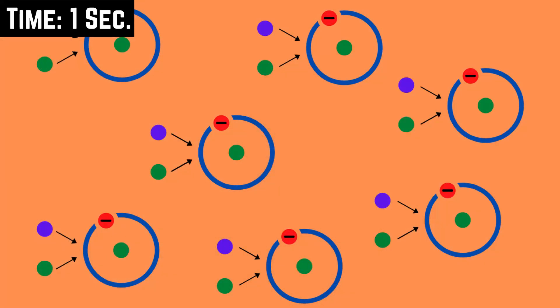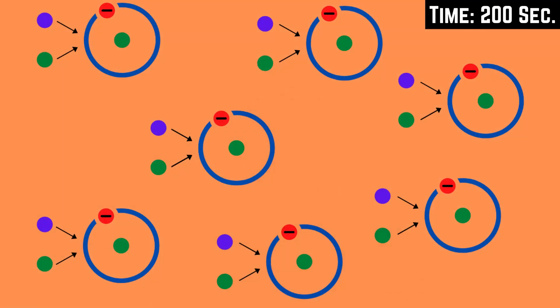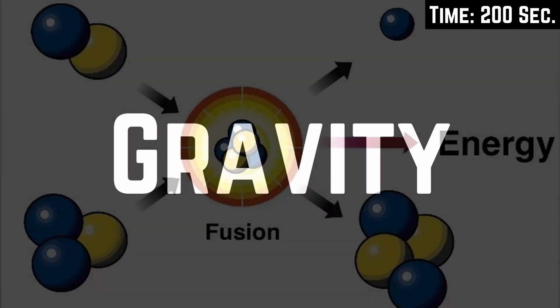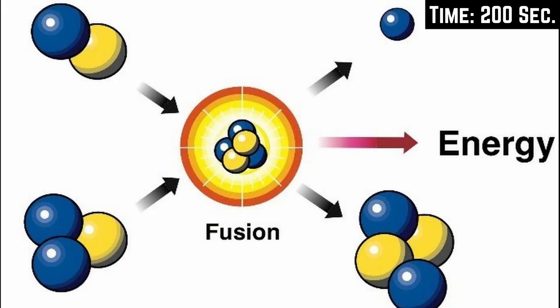And then the universe started to become more stable and cooled down, which is how protons and neutrons started to create the first atom — hydrogen. Over the next few minutes, everything started to cool down, more hydrogen atoms were created, and the hydrogen atoms were attracted towards one another because of gravity.